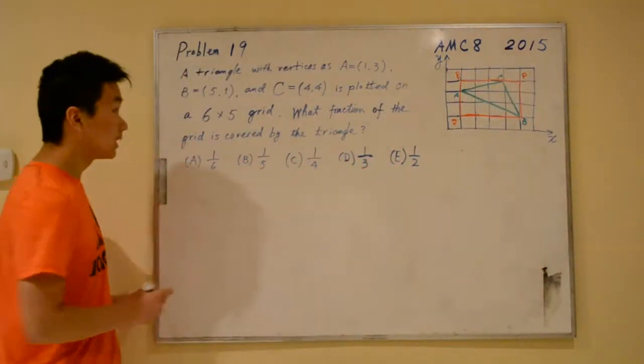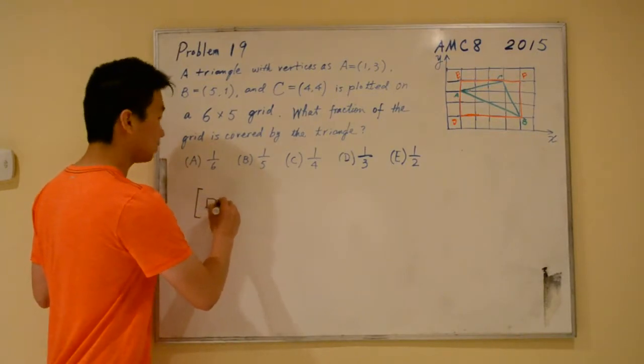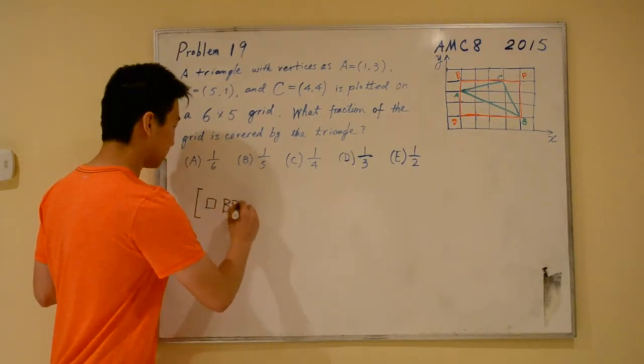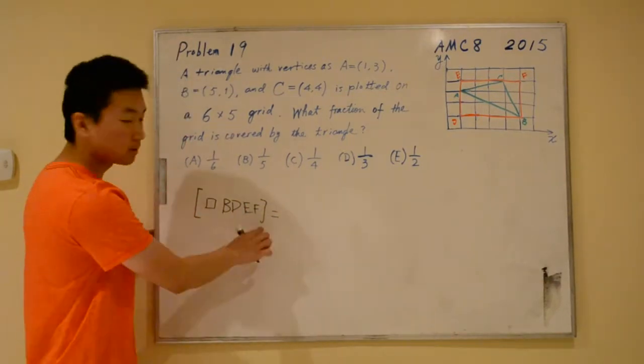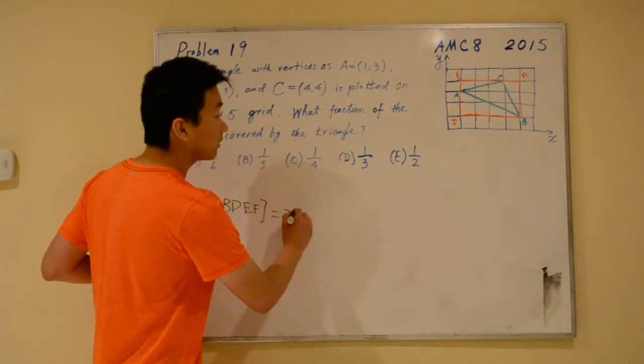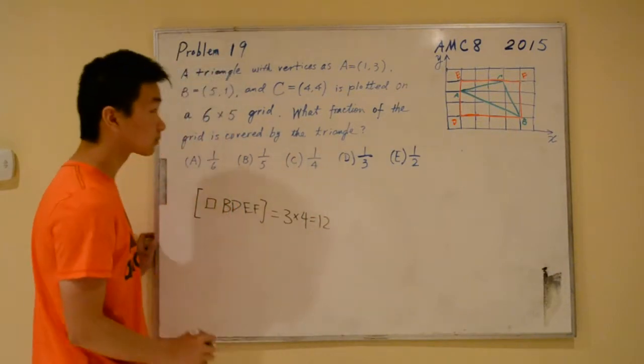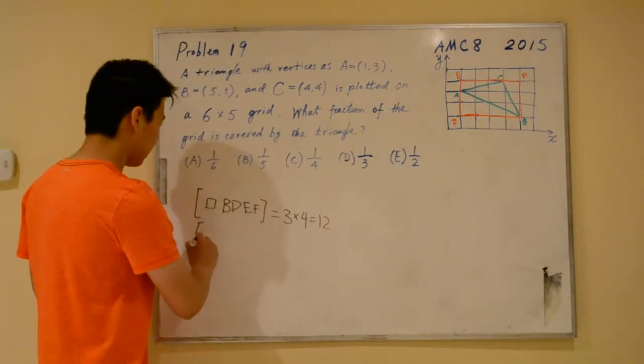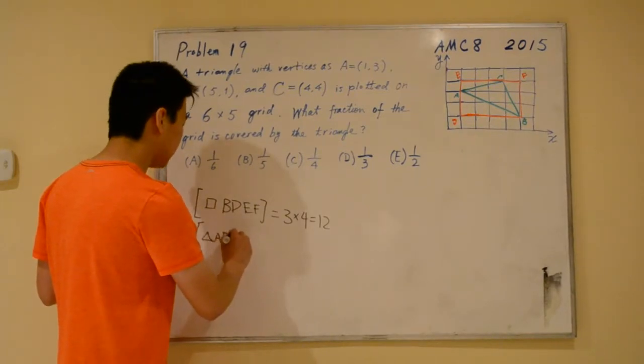The area of rectangle BDEF - by the way, the brackets mean area - is simply 3 times 4 equals 12. The area of triangle ABD is simply 2 times 4 over 2 equals 4.